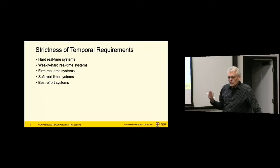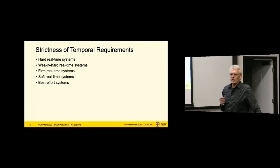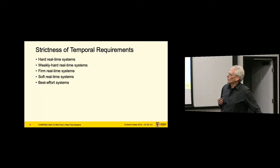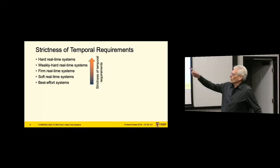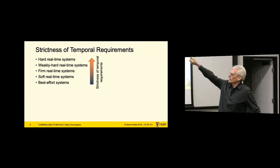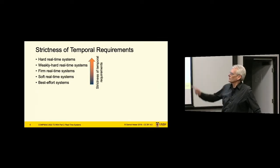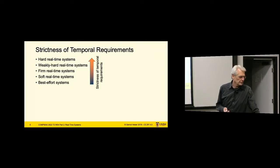Different kinds of real-time systems are basically about the strictness of temporal requirements — not the criticality, but the degree to which we need to strictly enforce time limits. They range from best effort systems over soft and firm and weakly hard and hard real-time systems with increasing strictness of temporal requirements.